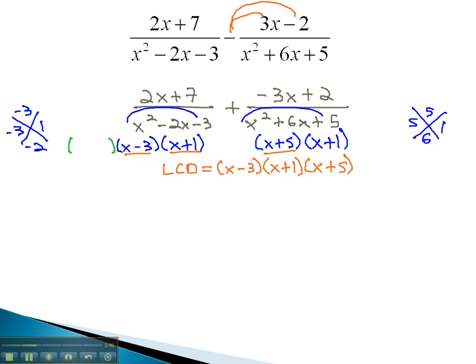Notice, the first denominator is missing the factor x plus 5. We will multiply by x plus 5 on both numerator and denominator. It will be helpful to remember we're multiplying the x plus 5 by the entire numerator, and so we must put it in parentheses.